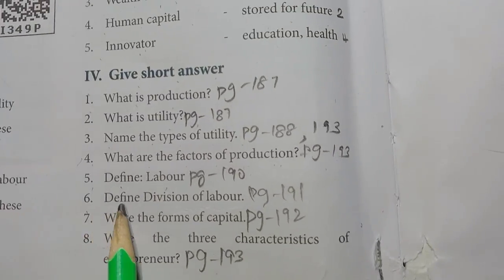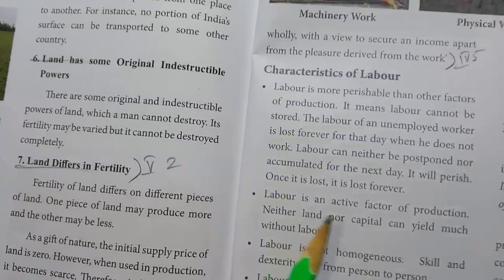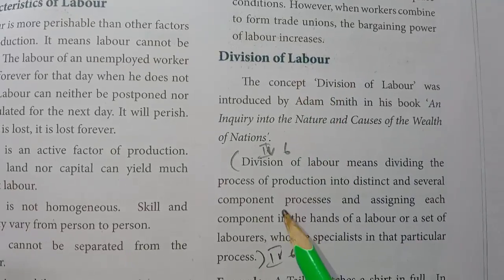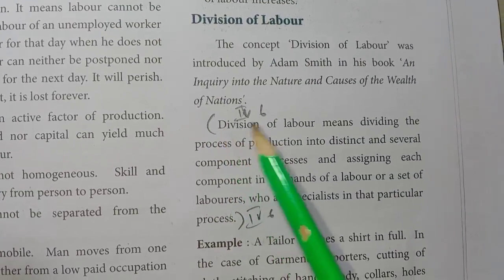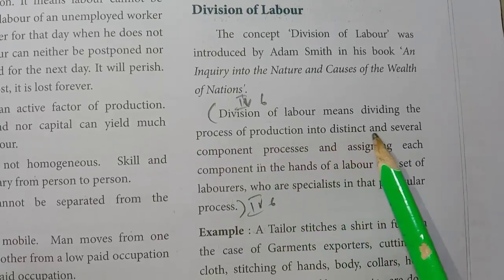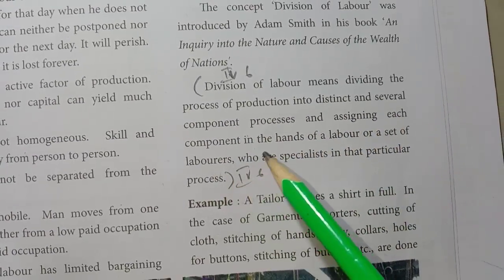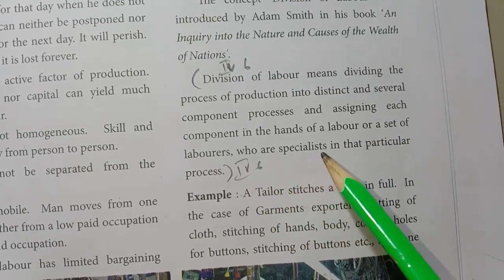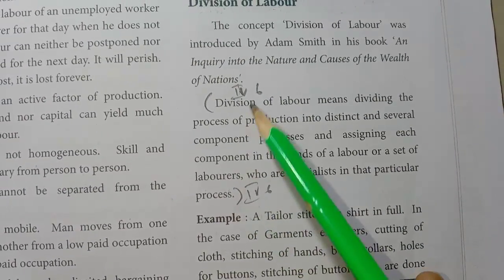Sixth one: Define Division of Labour. Page No. 191, under the topic Division of Labour, second paragraph. Division of Labour means dividing the process of production into distinct and several component processes and assigning each component in the hands of a labour or a set of labourers who are specialists in that particular process.